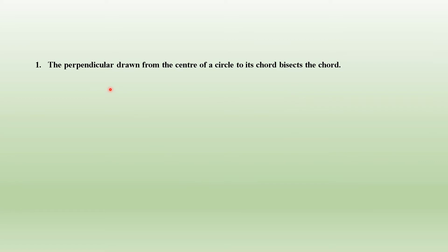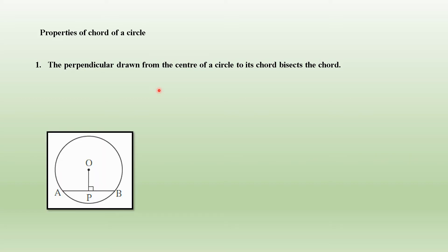A perpendicular drawn from the center of a circle to its chord bisects the chord. This is a very important property which we will use in solving our problems. In the figure, the circle has center O and AB is the chord. The perpendicular OP drawn from the center to chord AB will bisect the chord, dividing it into two equal parts.